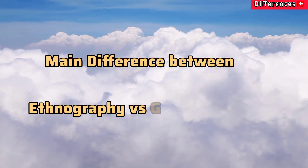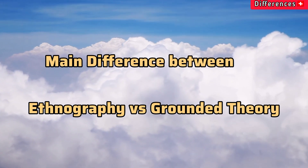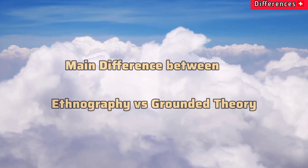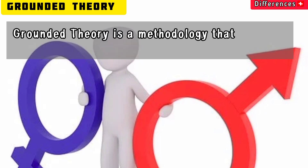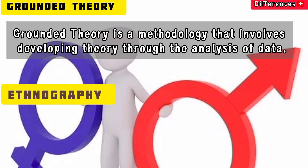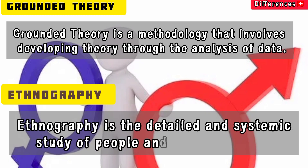What is the main difference between ethnography versus grounded theory? Grounded theory is a methodology that involves developing theory through the analysis of data. Ethnography is the detailed and systemic study of people and cultures.